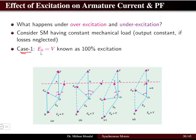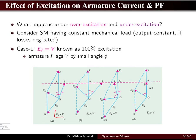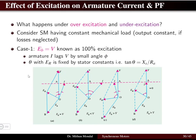Under normal excitation, the back EMF is equal to the supply voltage, and this normal excitation is known as 100% excitation. In this case, the induced EMF or back EMF equals the supply voltage, and the armature current lags the voltage by a small angle phi, where phi is the power factor angle — the current is lagging the voltage by angle phi.